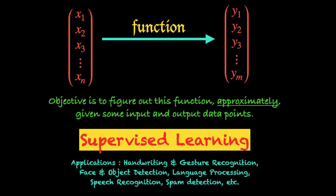Let me take you through a brief overview of supervised learning. Essentially, we have a set of inputs x1, x2, x3 up to xn which maps onto a certain set of outputs y1, y2, y3 up to ym. What we are trying to do in supervised learning is to estimate or approximate the function which relates the input to the output. Figuring out this function exactly is quite complicated and not possible in most real situations.